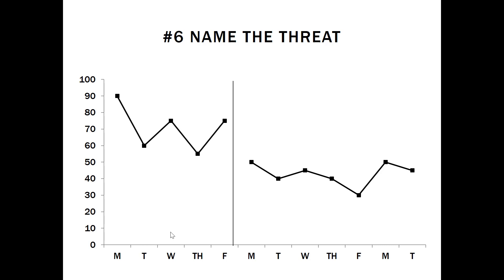Graph number six — name the threat. It helps to focus your attention on the x-axis where we see the days of the week labeled, and we notice some patterns in behavior based on day of week. Perhaps this participant has a caregiver or neighbor dropping them off on certain days and not others, and that might be contributing to the behavior we're seeing. We call this threat cyclical variability.